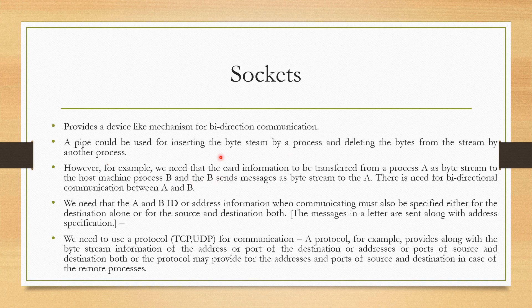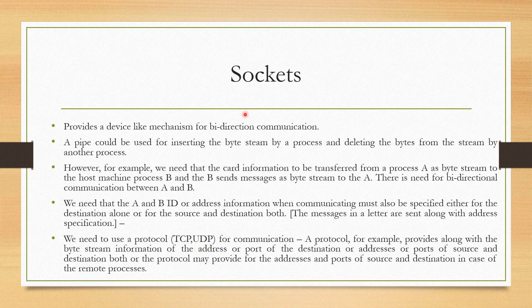Consider an example: card information is to be transferred from process A as a byte stream to the host machine process B, and then B is going to send a message as a byte stream back to A. There is a need for bidirectional communication between A and B, so in such cases we need to have a pair of sockets. We also need address information — that is, address information of both A and B must be specified along with the actual data. In such cases, we have to have a protocol. For socket communication, the two protocols employed are Transmission Control Protocol and User Datagram Protocol.